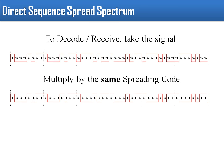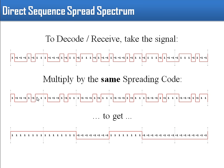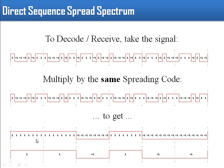When the receiver receives the encoded message, it multiplies it with the same chipping code. For example, 1 multiplied by 1 gives 1, and -1 multiplied by -1 gives 1. The resulting signal is then interpreted as the original message, which the receiver has successfully decoded. This is DSSS, also known as CDMA — Code Division Multiple Access.